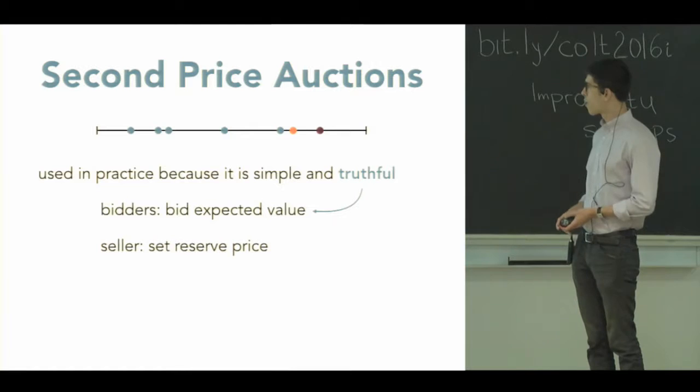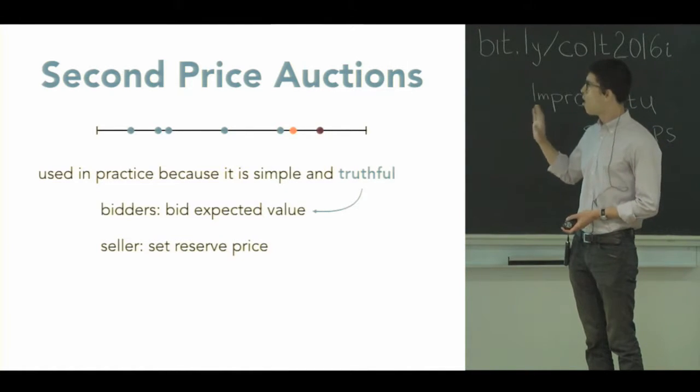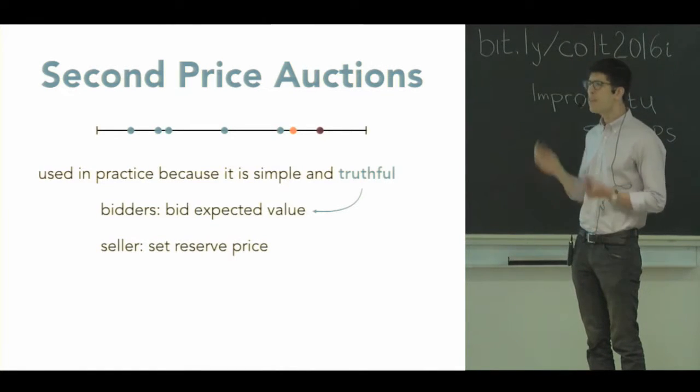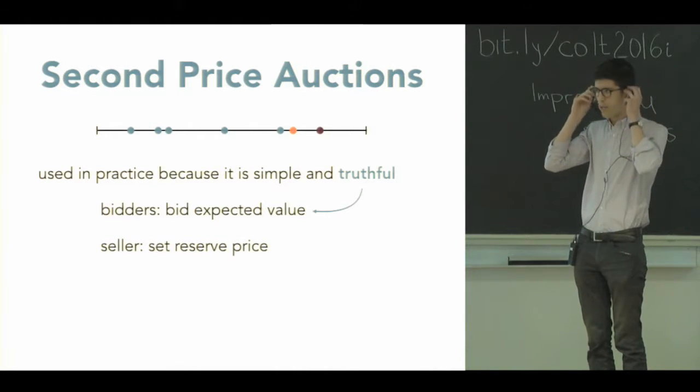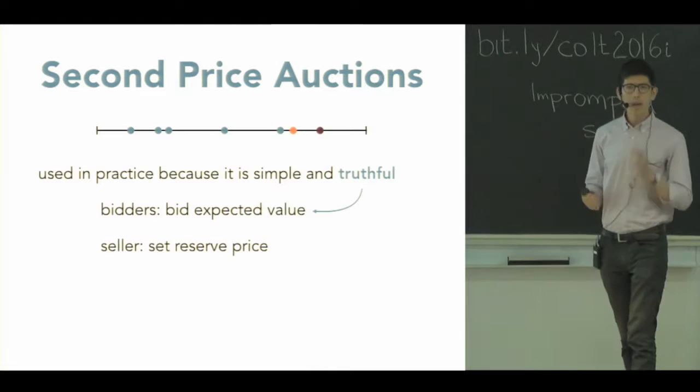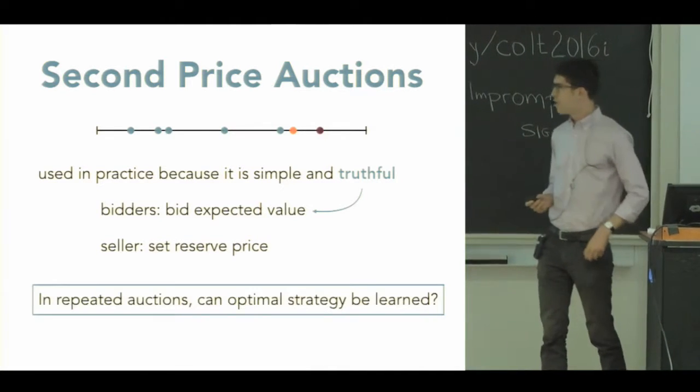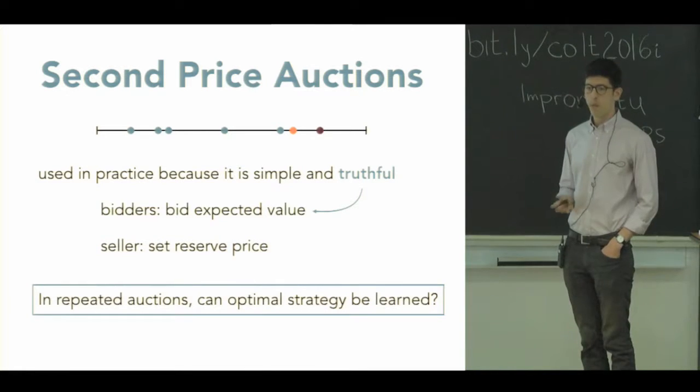Since we care about learning, the question is what do we do on the bidder side or on the seller side when I don't have the information I need to make these optimal plays? So if I'm the bidder, maybe I don't know what this item is worth to me. Maybe I've never bought it before or never seen it before. If I'm a seller, maybe I don't know enough about the bidders to decide what the right reserve price is. So the question is, in a repeated setting, can we learn this information from repeated auctions?